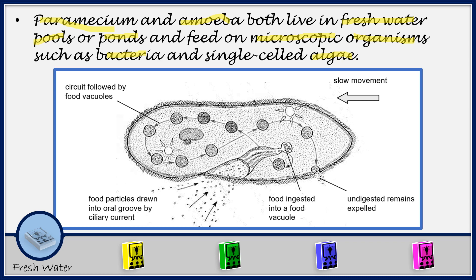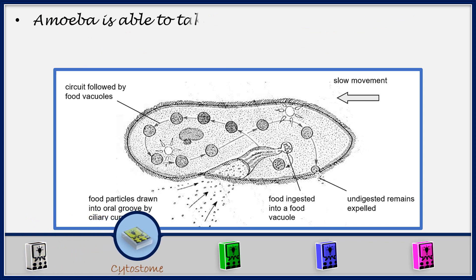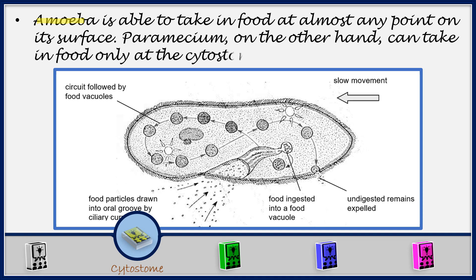We are going to see how the feeding takes place. For the Amoeba, it takes in food at almost any point on its surface, whereas the Paramecium takes in food only at the site of the cytostome.